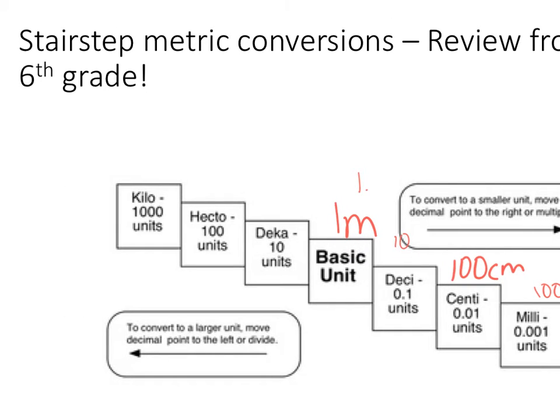If I go up the staircase from my base unit, though, so here's my base unit again, and that could be meters, liters, or grams. If I go up to a kilometer, do I have a thousand kilometers in one meter? No. So when I went down the staircase, I moved the decimal to the right. If I go up the staircase, I'm actually going to move it to the left. So rather than it being a thousand kilometers, I move it to the left one place. So I have 0.1 deca, 0.01 hectometer, and then 0.001 kilometer.